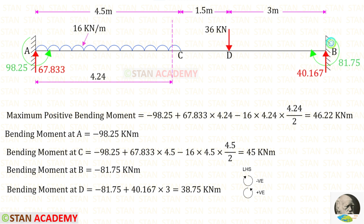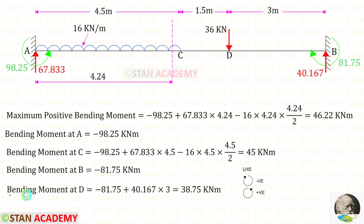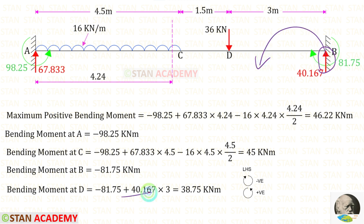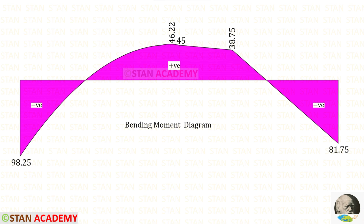To find the bending moment at points B and D we can use the left hand side rule. At point B we have MB acting in the clockwise direction, so it is negative. At point D the vertical reaction is acting in the anticlockwise direction so it is positive, with distance 3. For the bending moment at D we get 38.75. Here you can see the bending moment diagram.